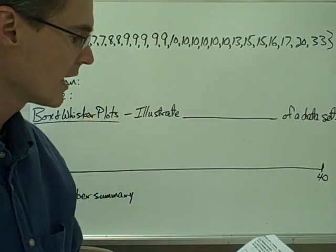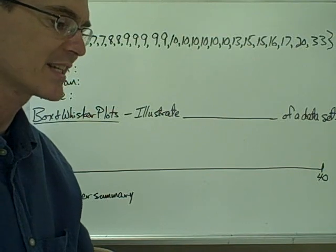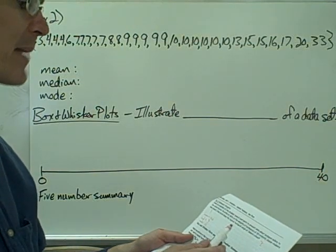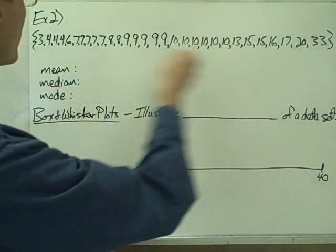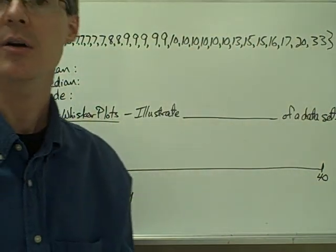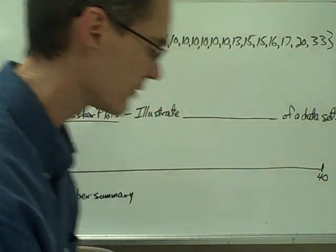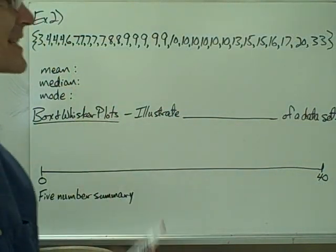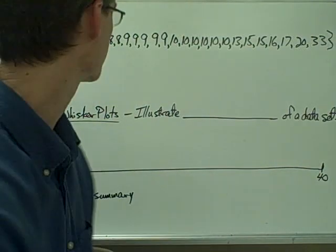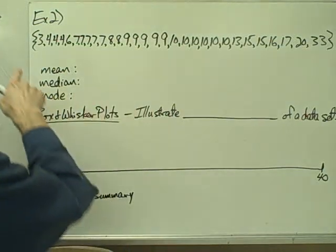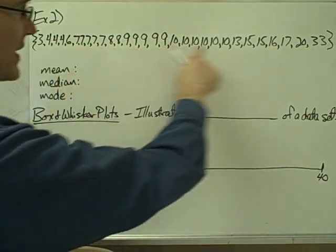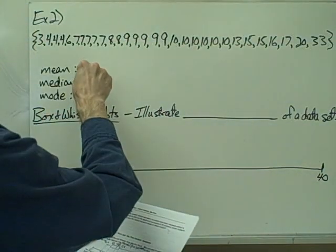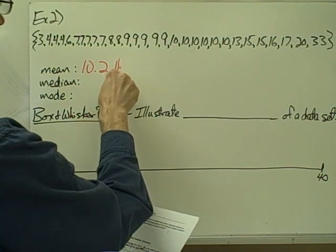Example number two: Owen is a member of the student council and wants to present data about backpack safety to the school board. He collects data on the weights of backpacks of 30 randomly chosen students. Here are the 30 different weights in pounds. How much does the typical backpack weigh at Owen's school? Since I'm talking about a typical value, I'm talking about a measure of central tendency, and I can calculate the mean, median, and mode using these 30 numbers.